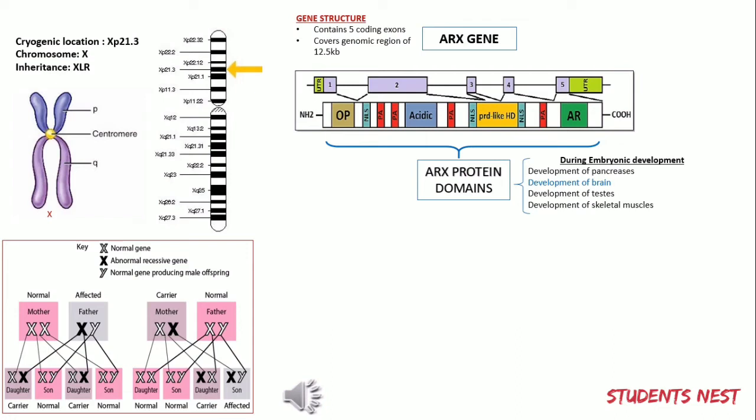In simple terms, the ARX protein is not directly involved in the development of these organs; rather, it regulates the genes that are directly involved in those developmental processes. Since EIEE is a nervous disorder, let's look at some of the functions performed by ARX-regulated genes that are involved in brain development.